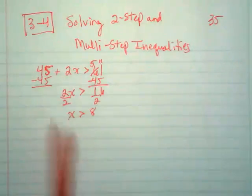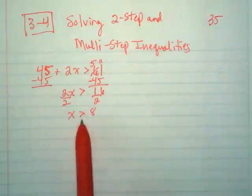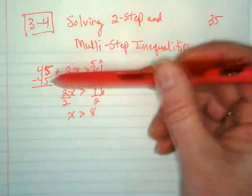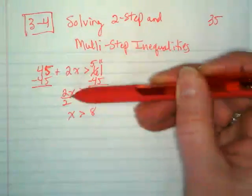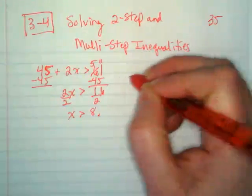So, if this had been an equal sign, you guys would have just started doing the same exact steps. It's the same as what we've been doing up until this point, except with an inequality. Once we subtract the 45, then we're going to divide by the 2, and we end up with x is greater than 8.